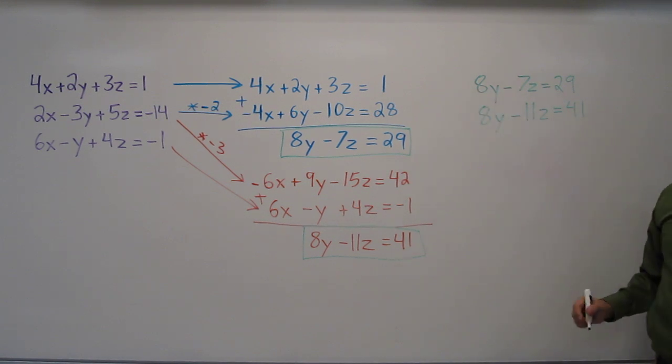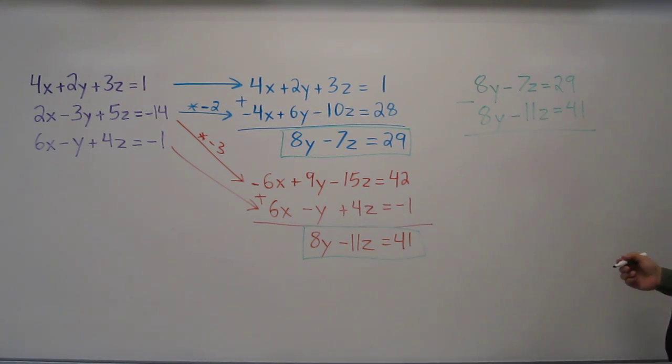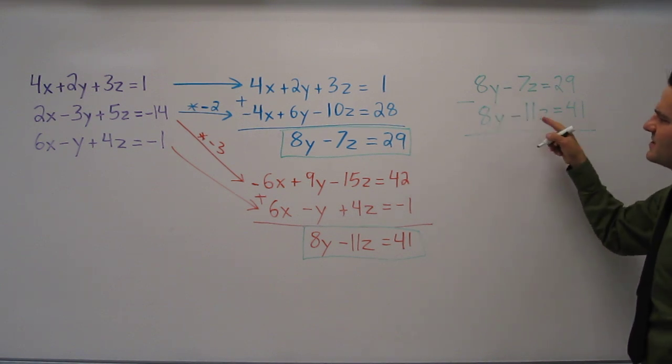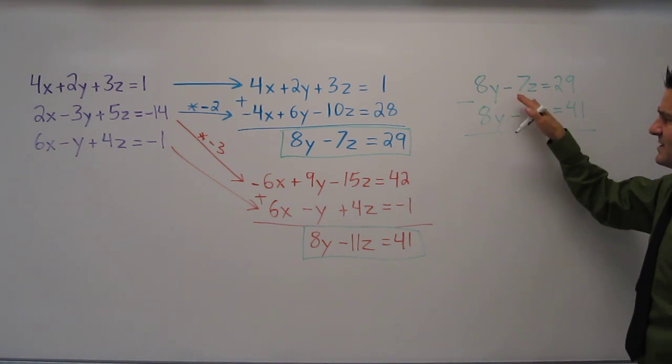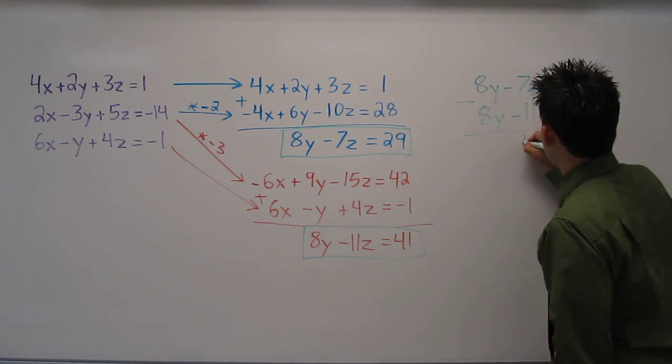Now 8y and 8y are identical. They have the same coefficient. If I subtract these two equations, I'm left with 0y and then I have negative 7z minus negative 11z. Well that's the same as negative 7z plus 11z. So I'm left with 4z.